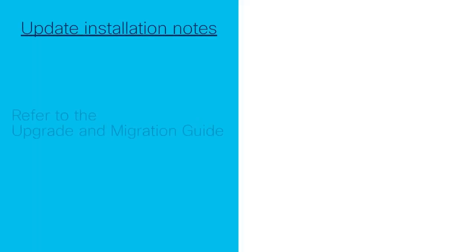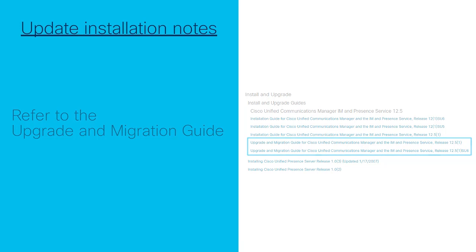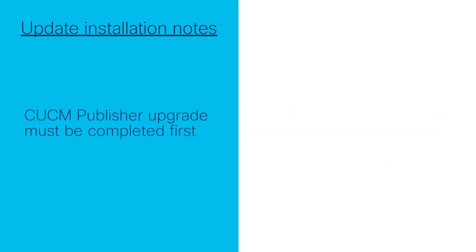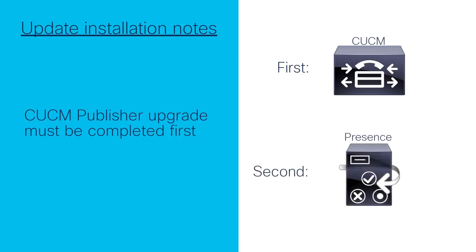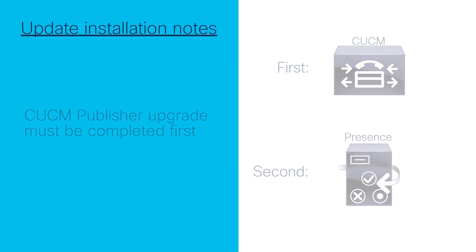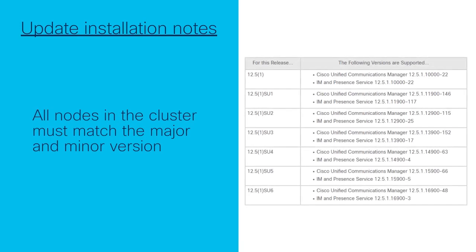A few notes before we begin. Please refer to the Upgrade Planning section of the Upgrade and Migration Guide for your specific version, as each version may have certain requirements. As IM and Presence is part of the Communications Manager cluster, the CUCM publisher must be upgraded first. The matching version of CUCM will be required for compatibility, and all current releases must match both major and minor version numbers across the cluster.